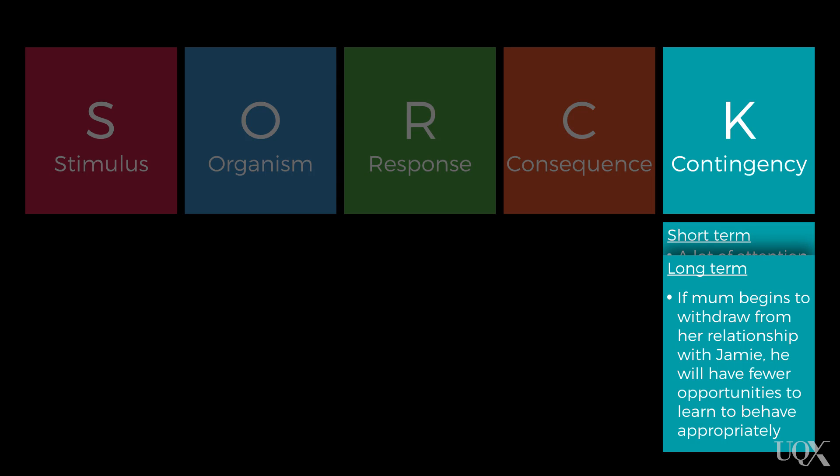In terms of the longer-term consequences, if mum feels out of control as a parent and fearful of her son, this is likely to influence her day-to-day relationship with Jamie, and most likely in a negative way. Over time, the relationship between Jamie and his mum is highly likely to deteriorate, which will then become an important contextual stimulus for future problem behaviors.